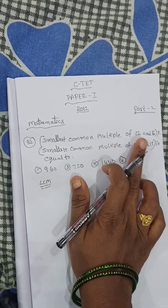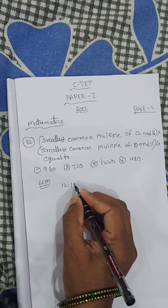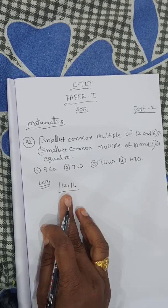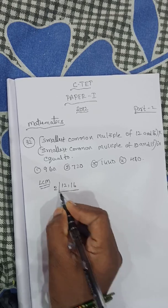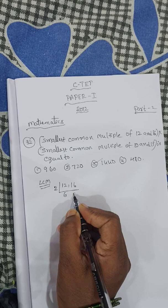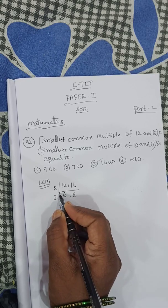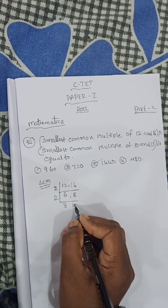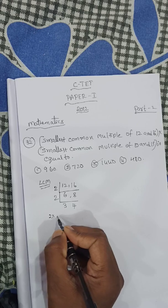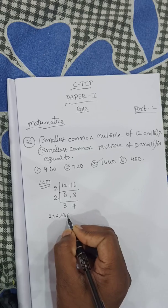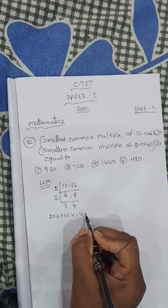Now first, LCM of the numbers 12 and 16. We divide: 2 into 6 gives 12, 2 into 8 gives 16. Again take 2: 2 into 3, 2 into 4. So LCM is 2 × 2 × 3 × 4 = 48.